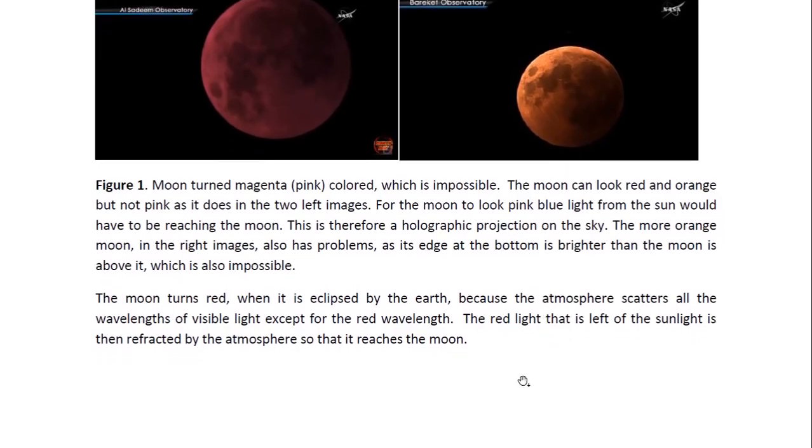Now, the moon turns red when it is eclipsed by the earth because the atmosphere scatters all wavelengths of visible light except for the red wavelength. The red light that is left of the sunlight is then reflected, refracted by the atmosphere, so that it reaches the moon.